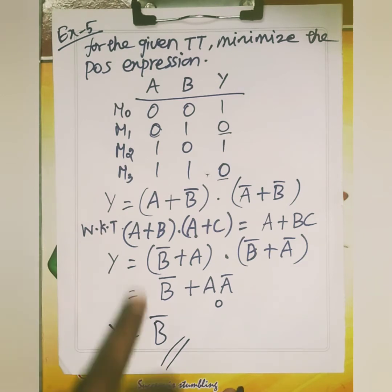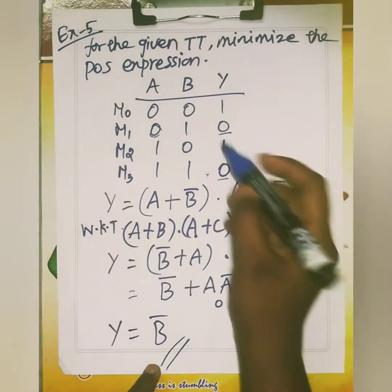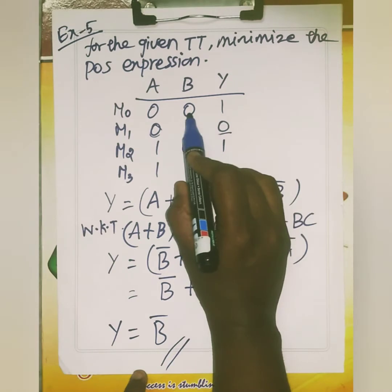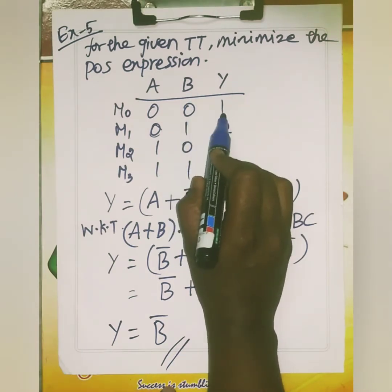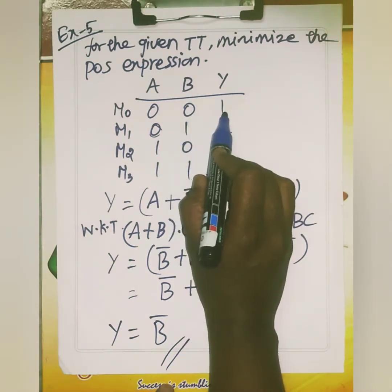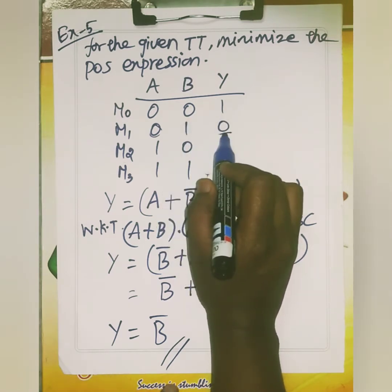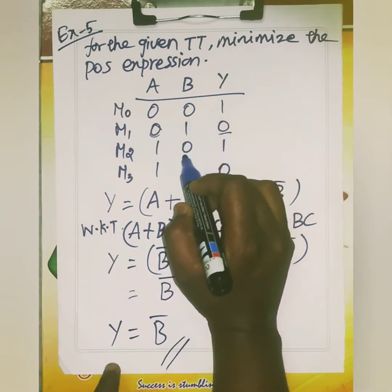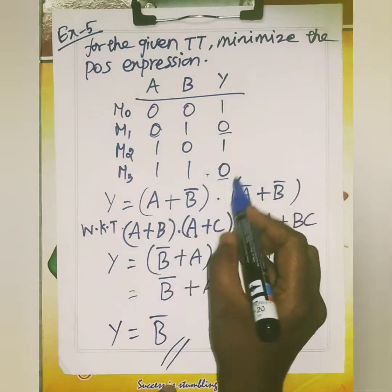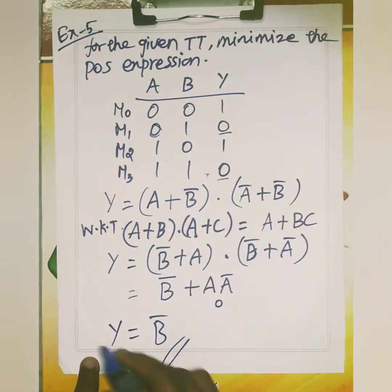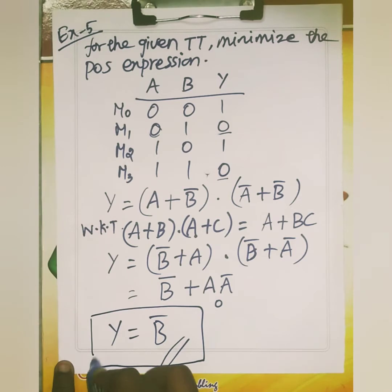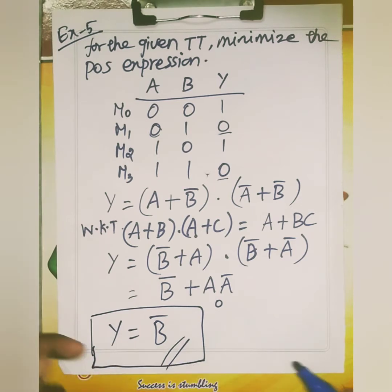You can check the answer with the truth table also. Here the input is 0 and the output is the complemented one; here the input is 1 and the output is complemented — 0, 1, 1, 0. So Y equals B bar. In this way you can also verify your answer from the truth table.